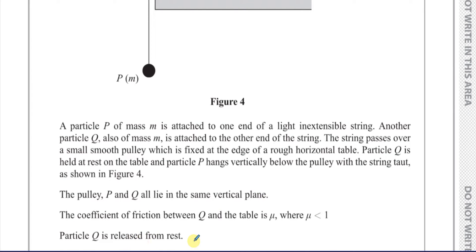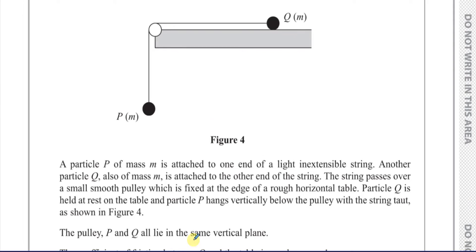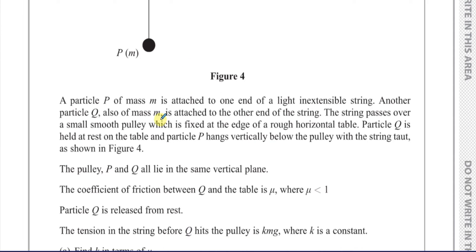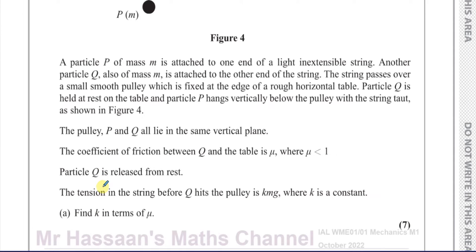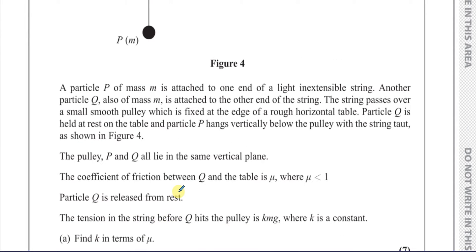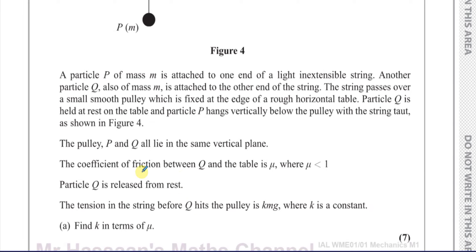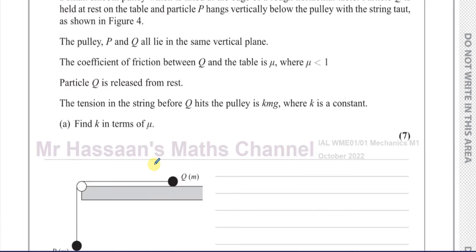The coefficient of friction between Q and the table is mu, where mu is less than one. Particle Q is released from rest. The tension in the string before Q hits the pulley is KMG, where K is a constant. Find K in terms of mu.